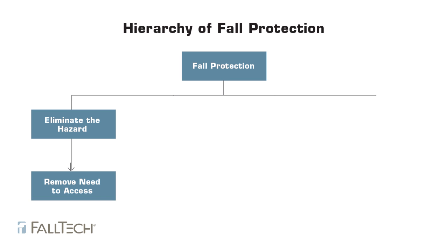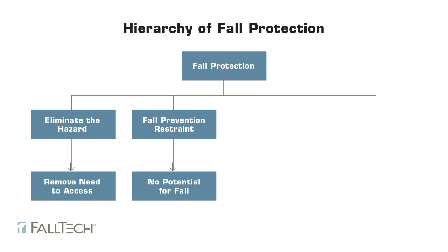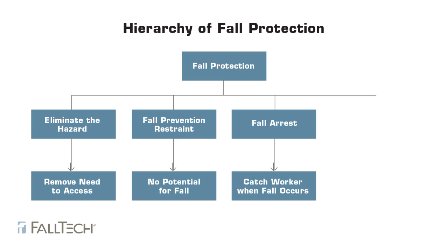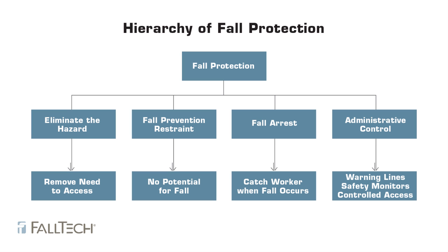What do we mean by fall protection? Fall protection is what you do to eliminate fall hazards, to prevent falls, and to ensure that workers who may fall aren't injured. This is known as the fall protection hierarchy.